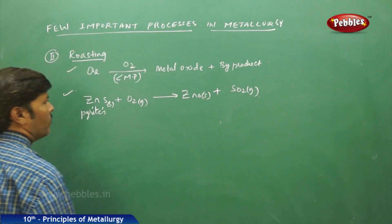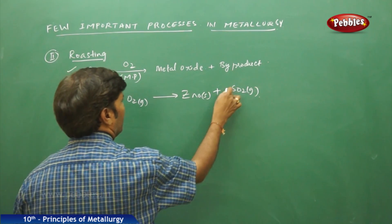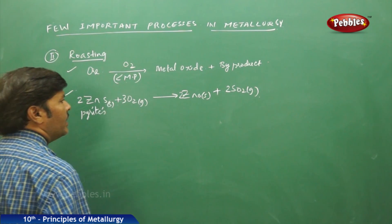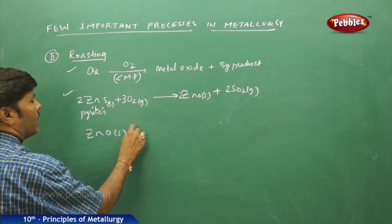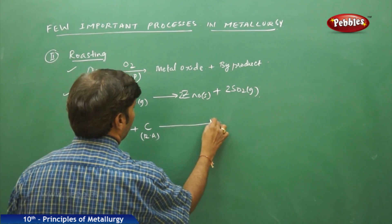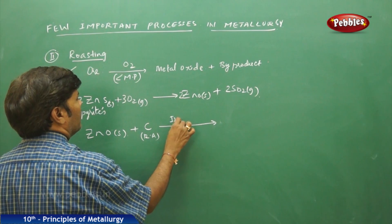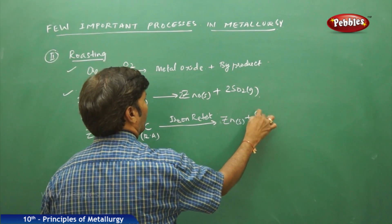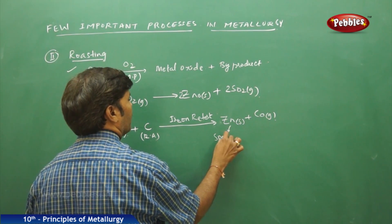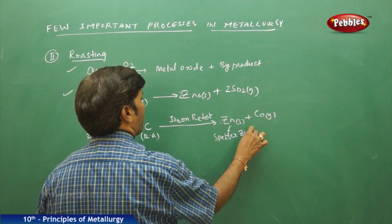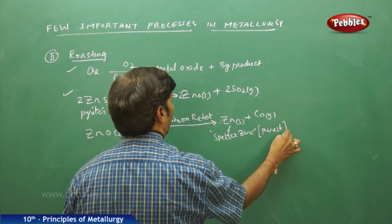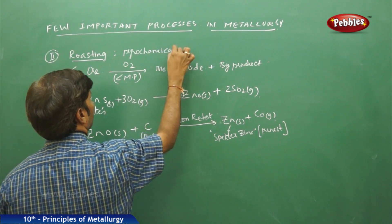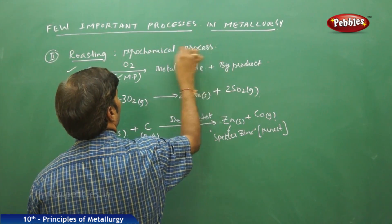Balancing the zinc sulphide roasting equation gives coefficients of 2 on each side. The zinc oxide solid obtained, called zincite, is then treated with carbon acting as a reducing agent in an iron retort: ZnO + C → Zn + CO. The zinc produced is called spelter, the purest form of zinc. Both smelting and roasting are pyrochemical processes.